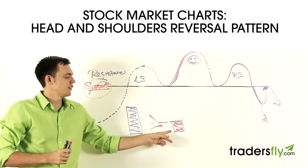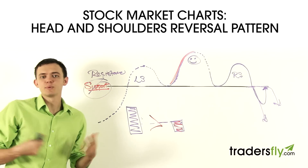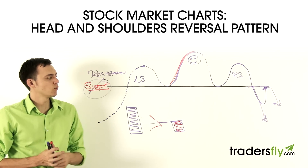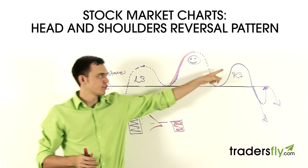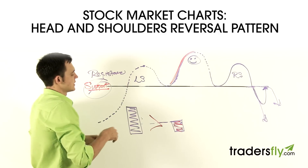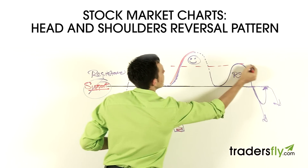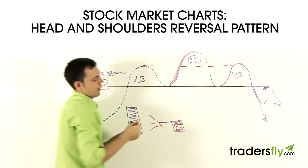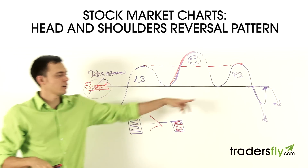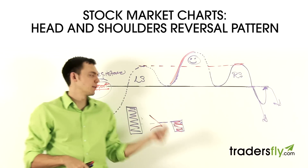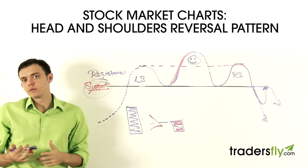If there's no volume, there's no conviction. With people not voting for it to go up, it's not sustainable. So eventually it creates a right shoulder to retest this support line — or resistance line — right over here. It creates that right shoulder, and obviously it's not going to make it because there's no sustainable volume. It'll eventually dip back down and maybe retest this primary neckline support or resistance.